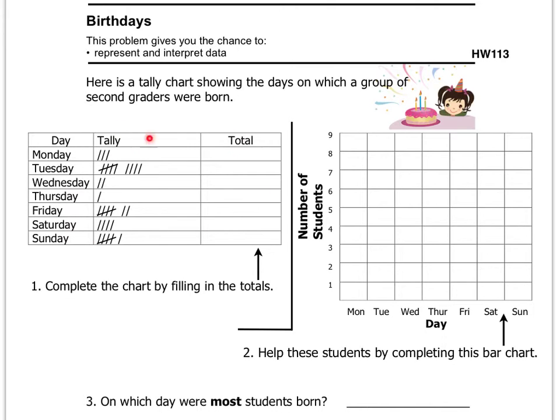Here's a tally chart showing the days on which a group of second graders were born. So we've got a tally chart here, and it says to complete the chart by filling in the total. So you're going to have to count the tallies that you have there and write the numerical number here. I'll do one of them for you. I'll do Friday because I like Fridays. So Friday I have 1, 2, 3, 4, 5, 6, 7. So I'm just going to write 7 on Friday. So please be sure and fill in all the totals here for number 1.